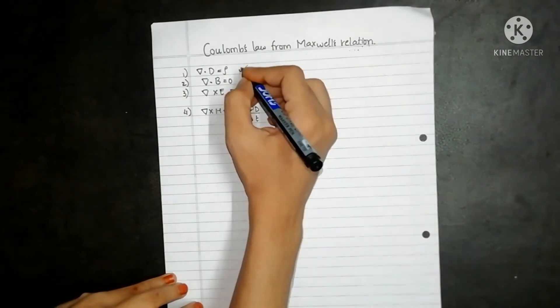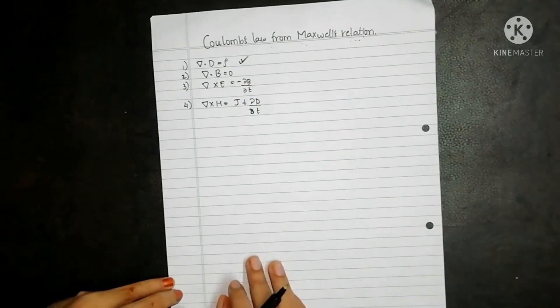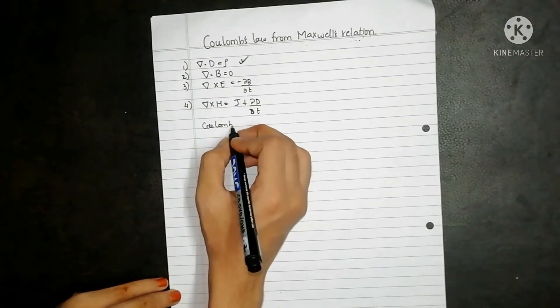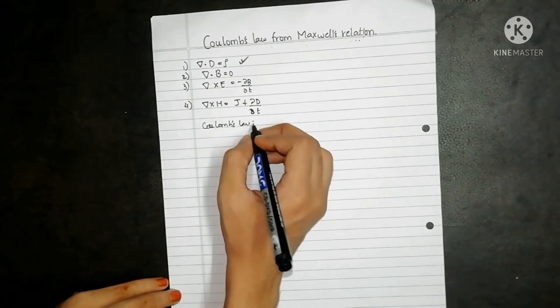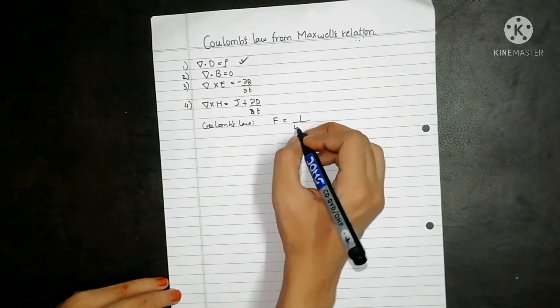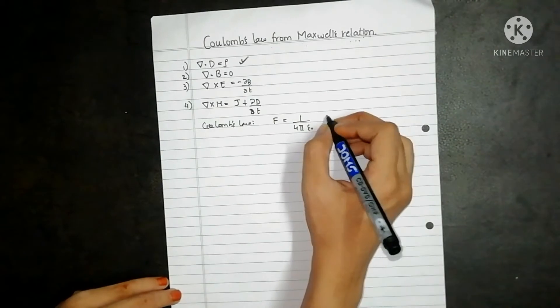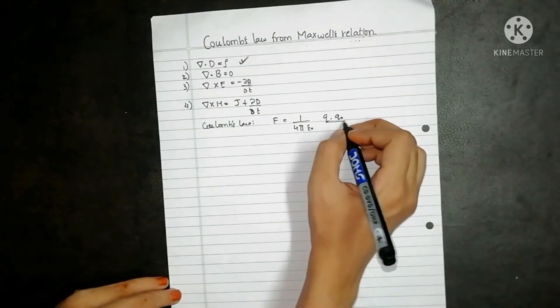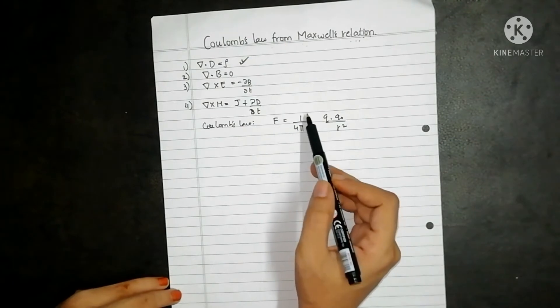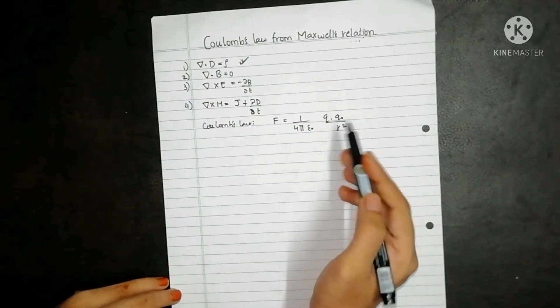We will only require the first relation, that is del dot D is equal to rho, and we need to prove Coulomb's law which is given as F is equal to 1 upon 4 pi epsilon naught Q into Q naught upon r square, or you can also write this as F is equal to 1 upon 4 pi epsilon naught Q1 Q2 upon r square.